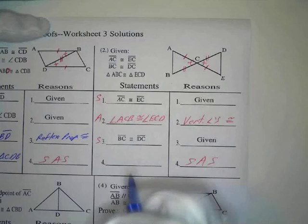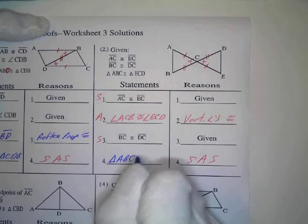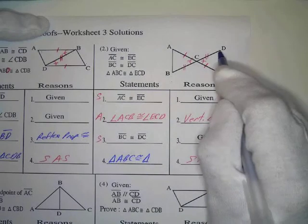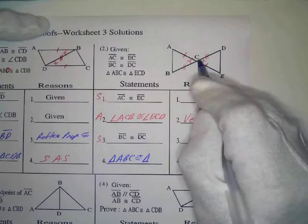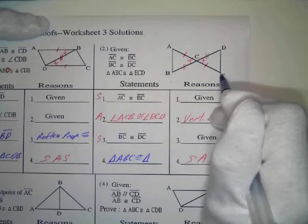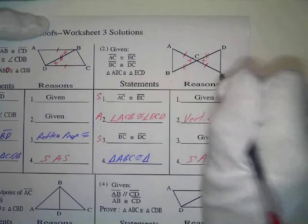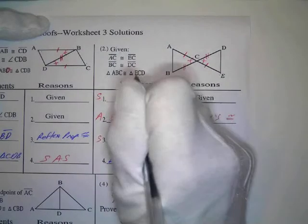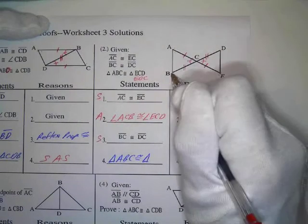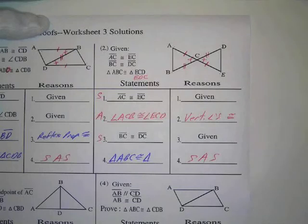Now we have our side-angle-side. That gives me triangle congruence. Triangle ABC is congruent to triangle EDC. Wait, ABC should be EDC. I should have written the correspondence like this. This is another misprint. EDC, because we have to go the same order. ABC, EDC. I'm going through that line, so it should be EDC.